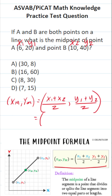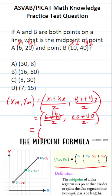Let's go ahead and plug those values in and solve accordingly. This becomes 6 plus 10 over 2, and then 20 plus 40 over 2. 6 plus 10 is 16; 16 divided by 2 is 8. 20 plus 40 is 60; 60 divided by 2 is 30. So the midpoint of point A and B is (8, 30).